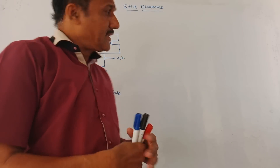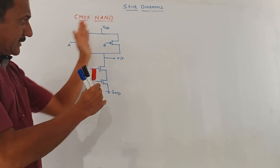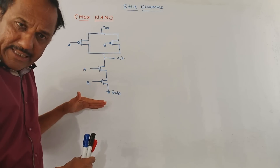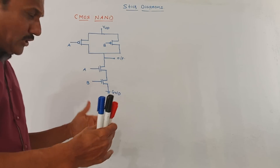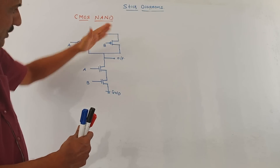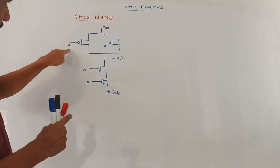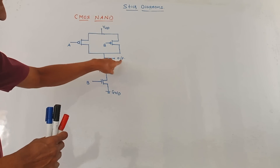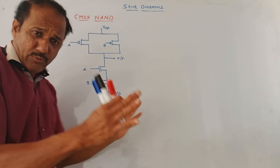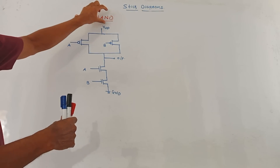Next, we will draw the STICK Diagram for the CMOS NAND gate. The lower part is PDN — for a NAND gate, the two N MOSFETs are in series. For the PUN network (upper portion), since the PDN is series, I have drawn two parallel P MOSFETs. Two inputs A and B are required, and the output is taken from the drain connection. VDD is at the upper side, ground at the lower terminal.